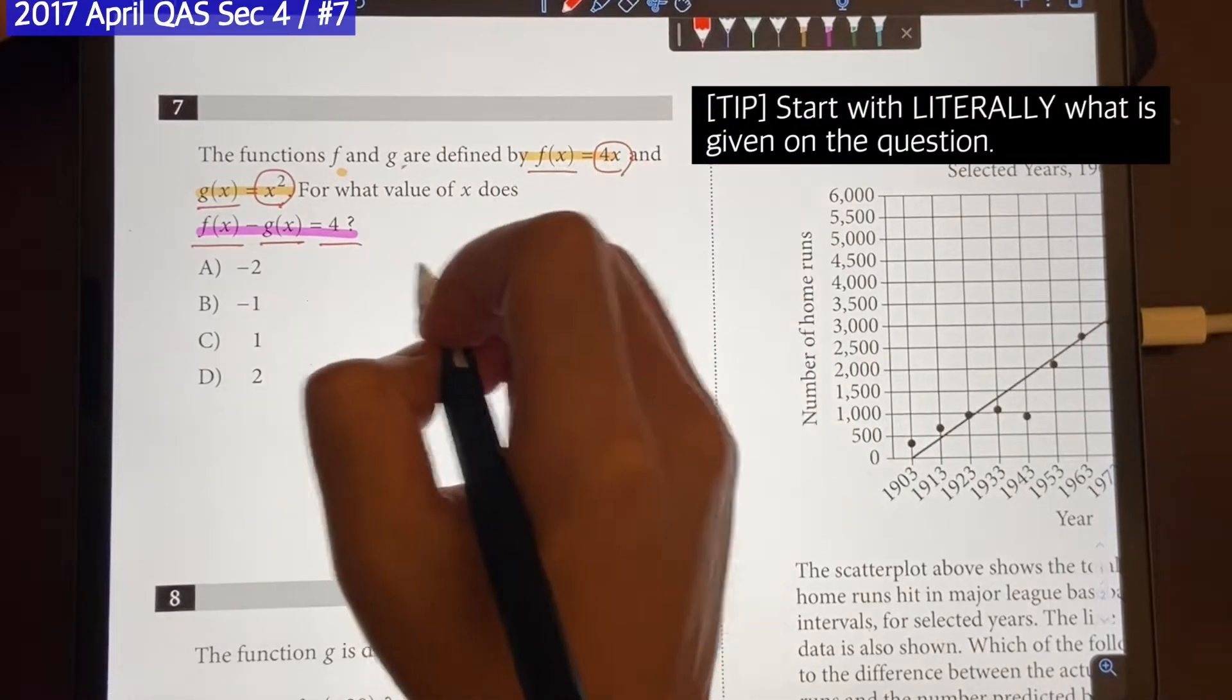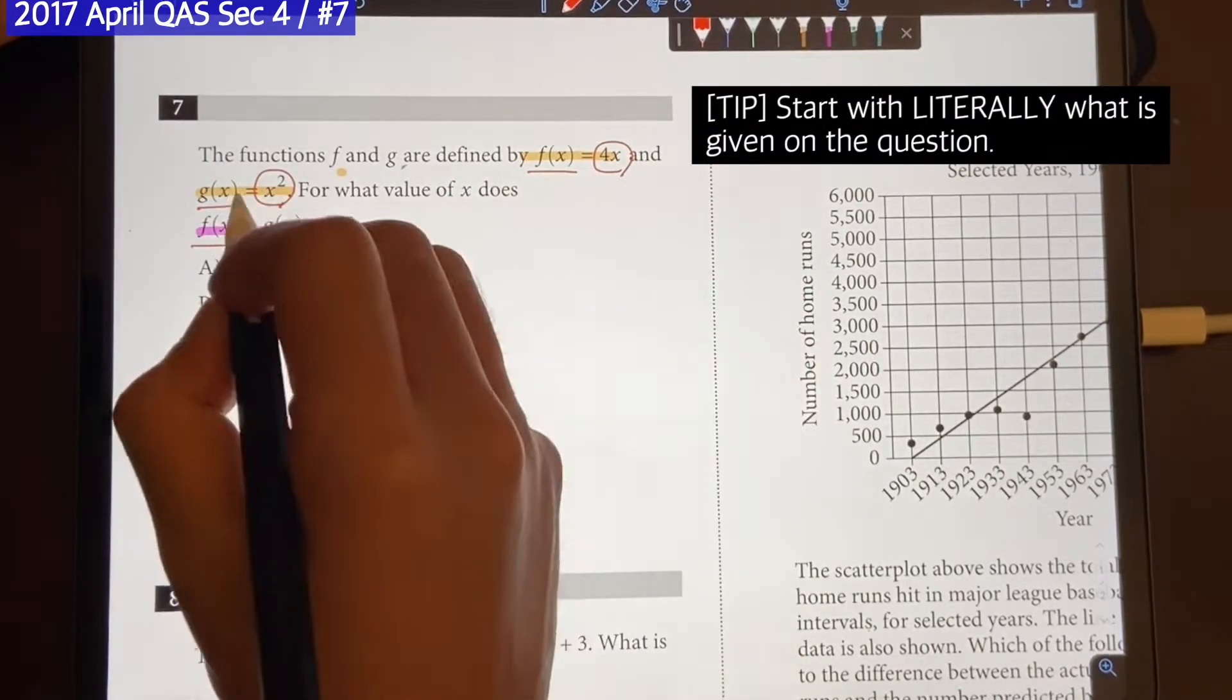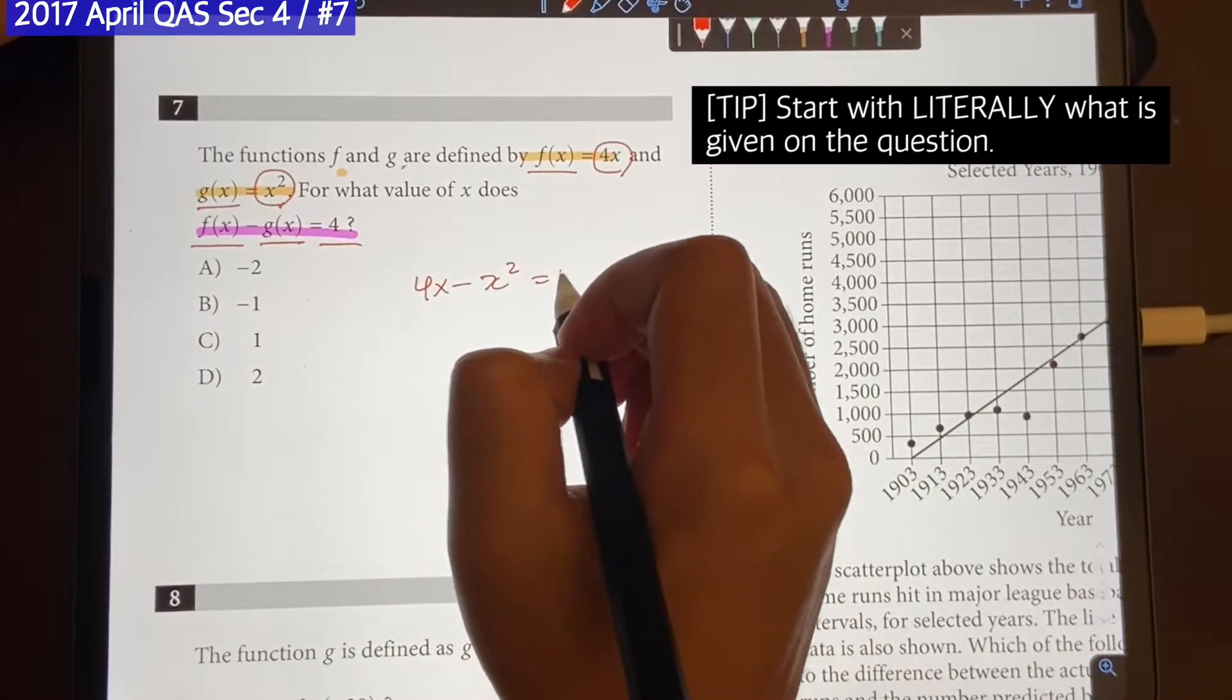So let's just plug them in. f of x, it will be 4x minus g of x, which is just x squared, is equal to 4, right?